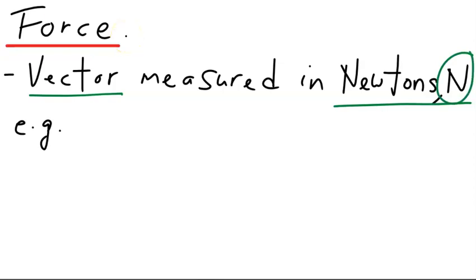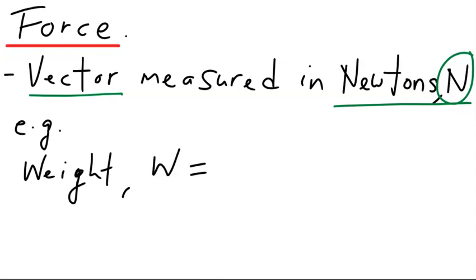Examples of force: Weight. Weight is a form of force. This is the definition of weight. Since weight is force, it is measured in the unit of Newtons. Essentially, the definition of weight is mass of an object times the strength of gravitational acceleration.